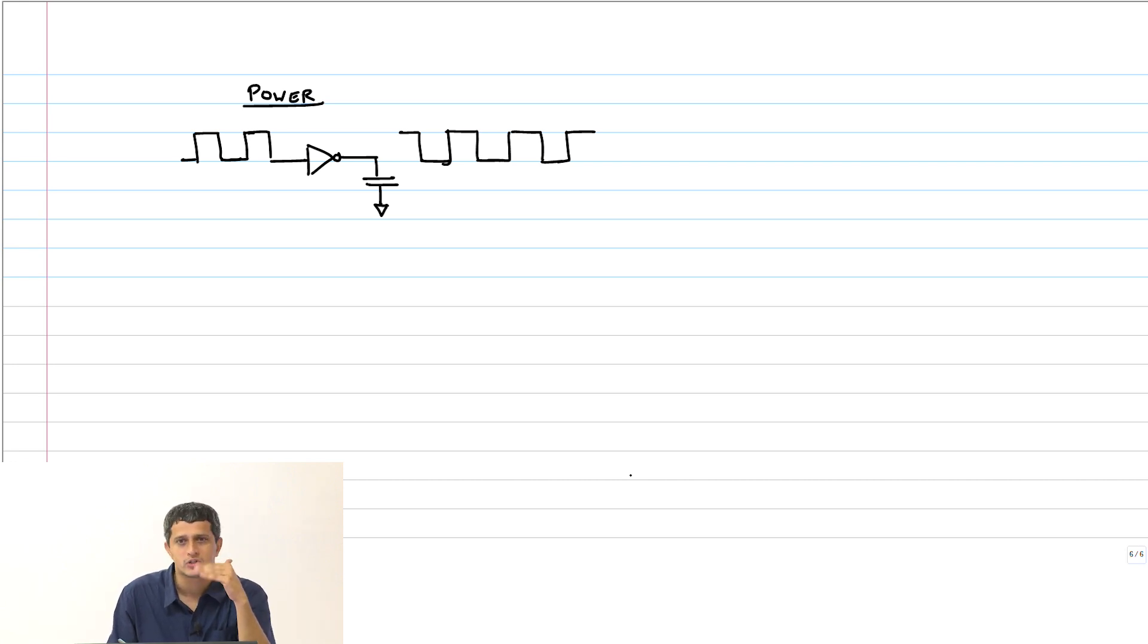So, there is this continuous charging and discharging process that is happening in a digital circuit and obviously, this is going to constitute some power. So, we need to now quantify how much of this energy is. So, it turns out that there are three kinds of power or energy that will be involved in CMOS circuits.